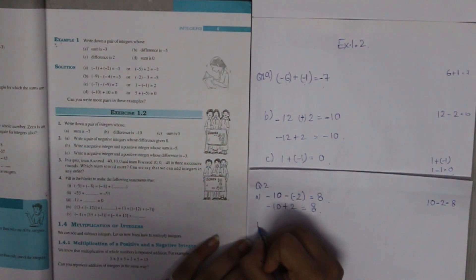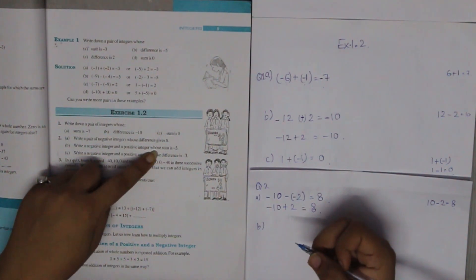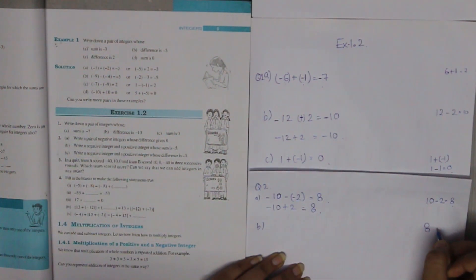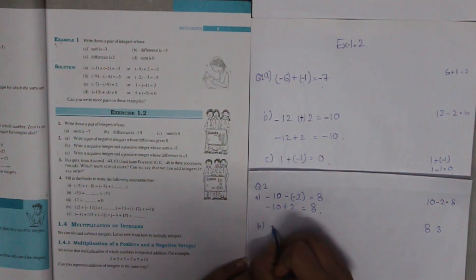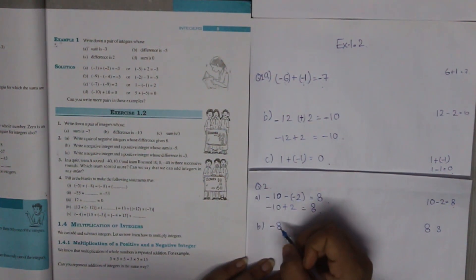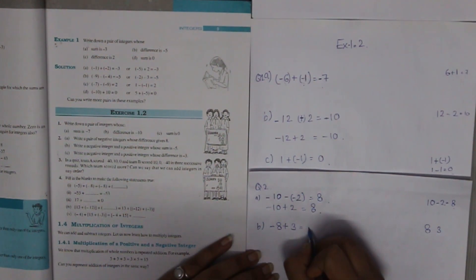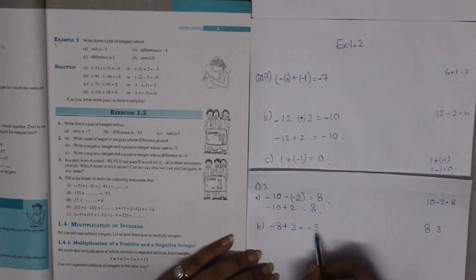Part B: Write a negative integer and a positive integer whose sum is minus 5. We take minus 8 and plus 3. So minus 8 plus 3 gives the answer minus 5 — one positive and one negative number whose sum is minus 5.